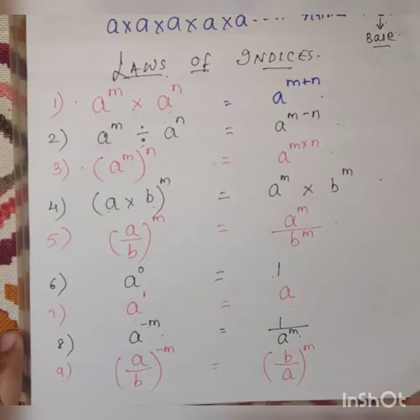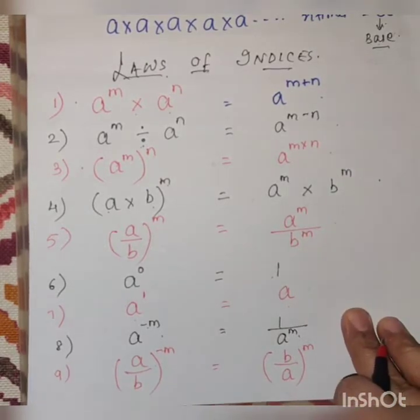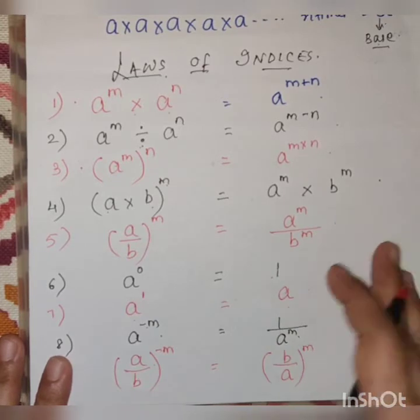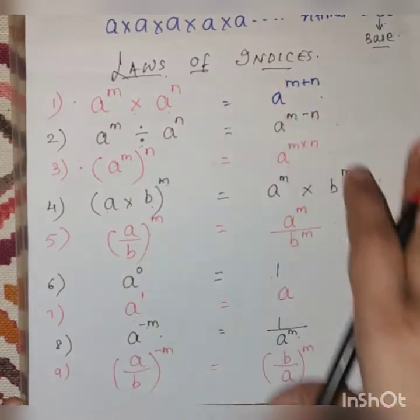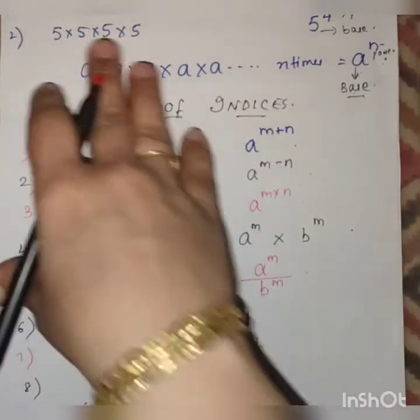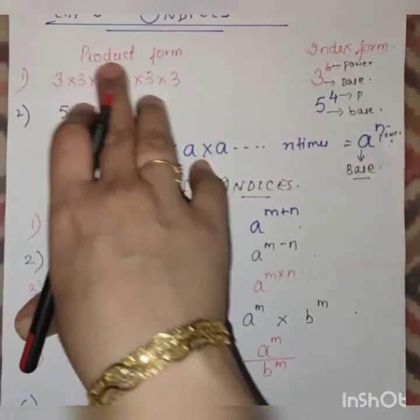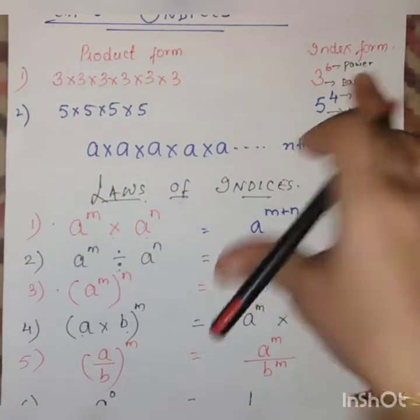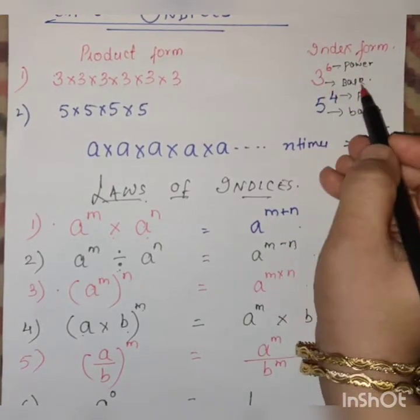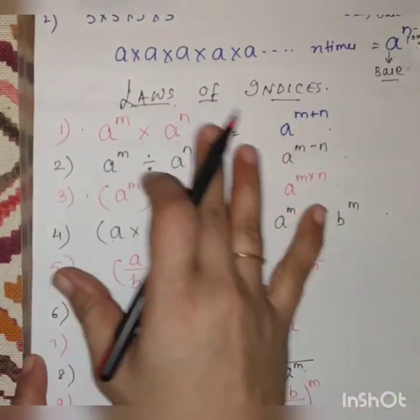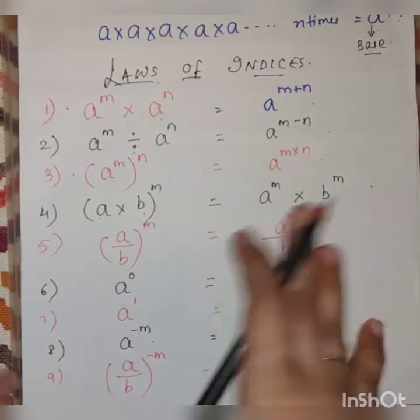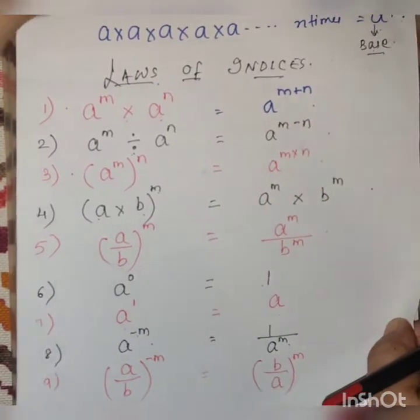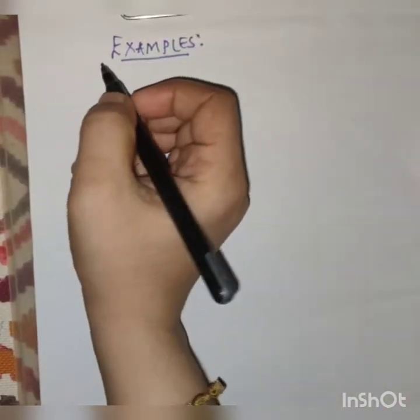So students, these are all the laws which we have already studied in our previous standard. We have just done a quick recall so that you can go through them again and these basic things are clear. This is the product form, this is the index form, this is power, this is the base, and these are the laws of indices. Now based on these laws we will do some sums.